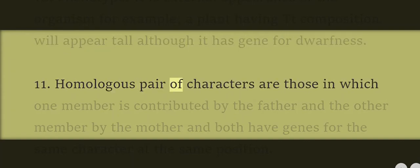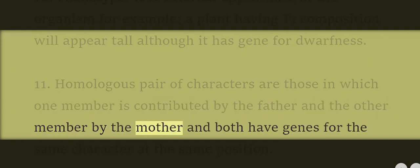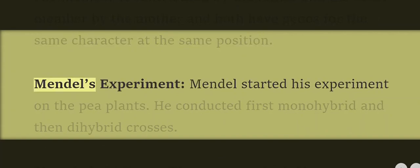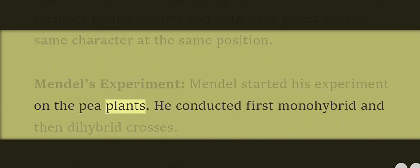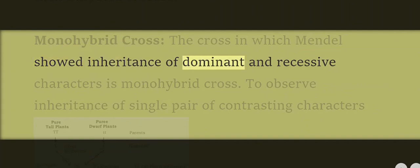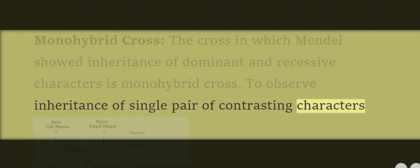11. Homologous pair of characters: Those in which one member is contributed by the father and the other by the mother, and both have genes for the same character at the same position. Mendel's Experiment: Mendel started his experiment on pea plants. He conducted first monohybrid and then dihybrid crosses. A monohybrid cross is the cross in which Mendel showed inheritance of dominant and recessive characters, used to observe inheritance of a single pair of contrasting characters.